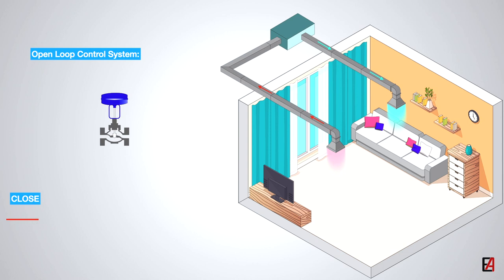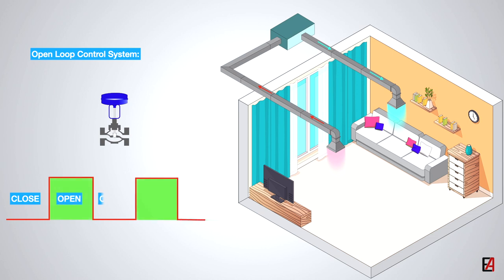Let's assume the control valve is set to fully open for 30 minutes continuously and to fully close for the next 30 minutes. So the control valve operating cycle is 30 minutes open, 30 minutes close, and so on.